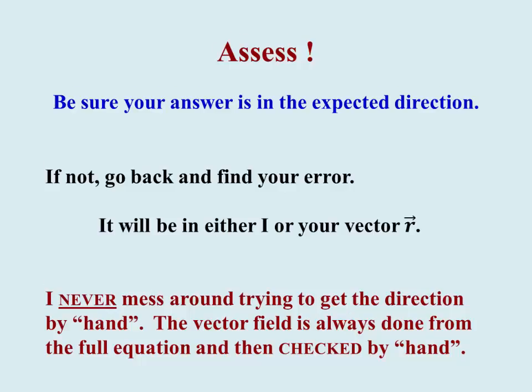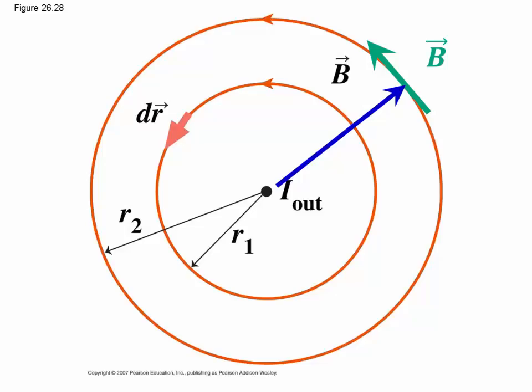Assess your answer. Again, I'll repeat. I never mess around trying to get the direction by hand. I do the vector field calculation formally and carefully and check it by hand whenever I've got a field in some arbitrary place and often when I'm doing the simple cases as well. For this problem, that field is again in the negative x plus y direction because it's tangent to a circle at the point where we wanted the field. This is our assessment. It must be tangent to the circle going around the current.